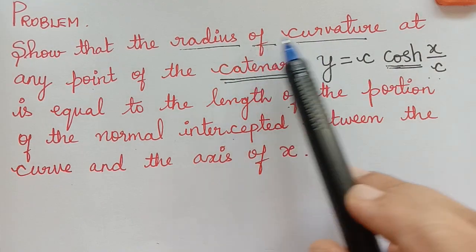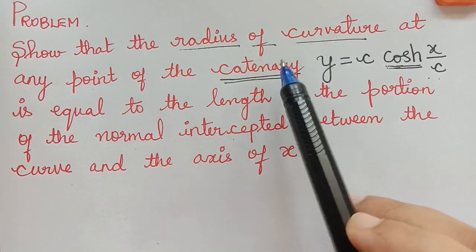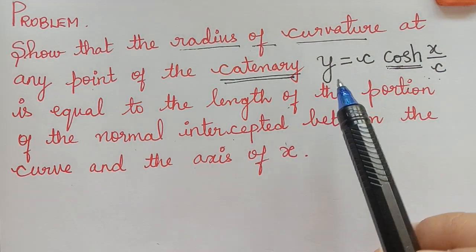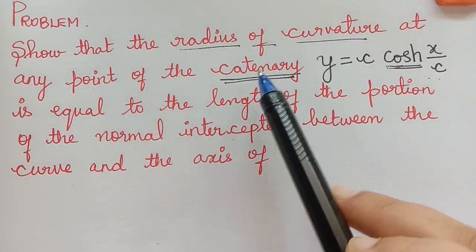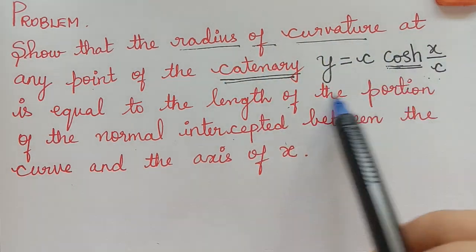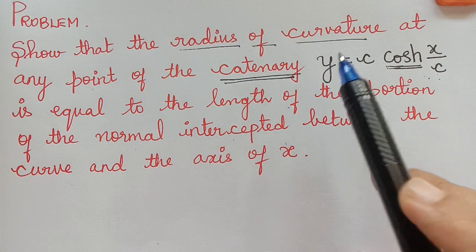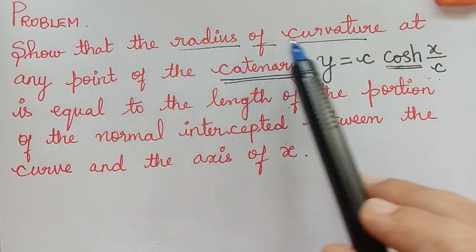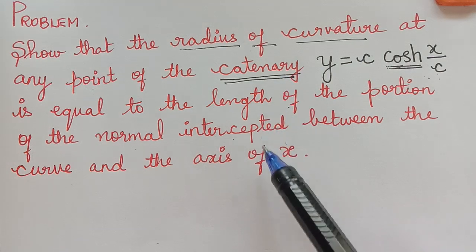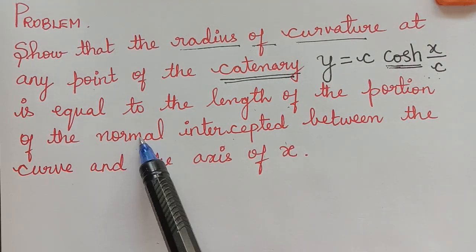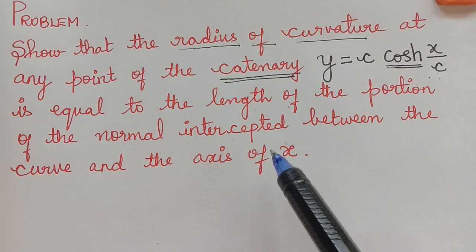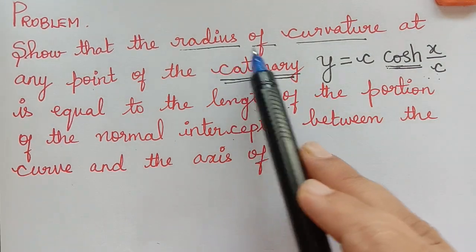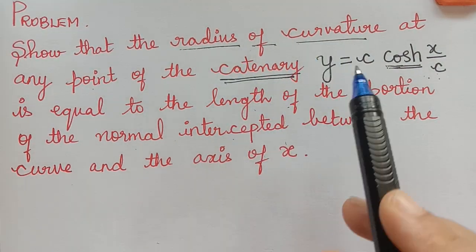First of all, we shall find the radius of curvature of the given catenary. Sometimes this question may ask you to find the radius of curvature of the catenary, or sometimes they may ask you to prove that the radius of curvature is equal to the length of the normal intercepted between the curve and the x-axis. For this, we have to find the radius of curvature.